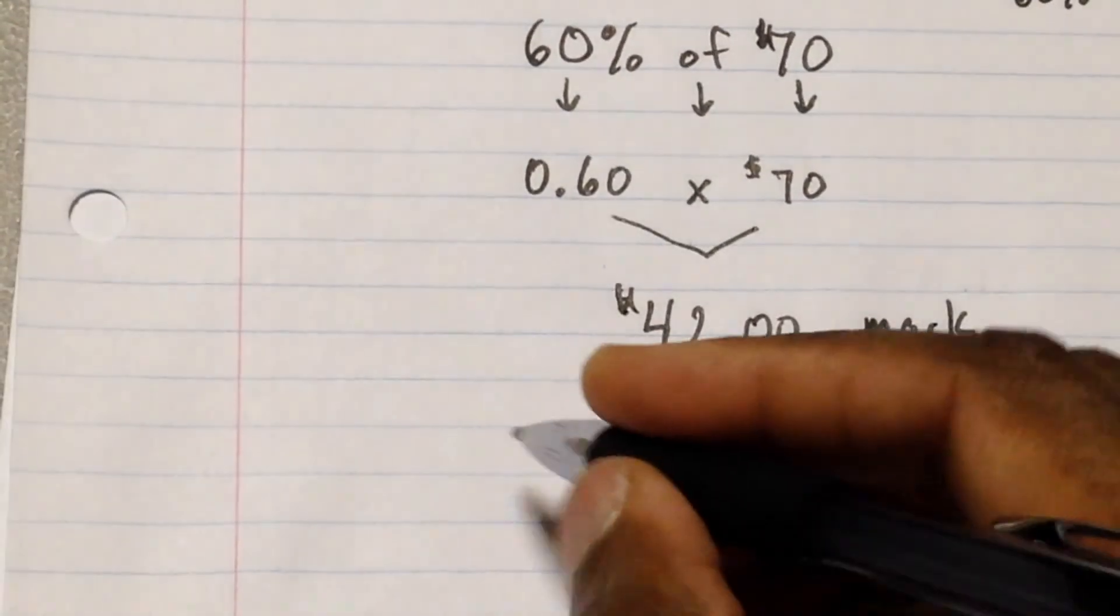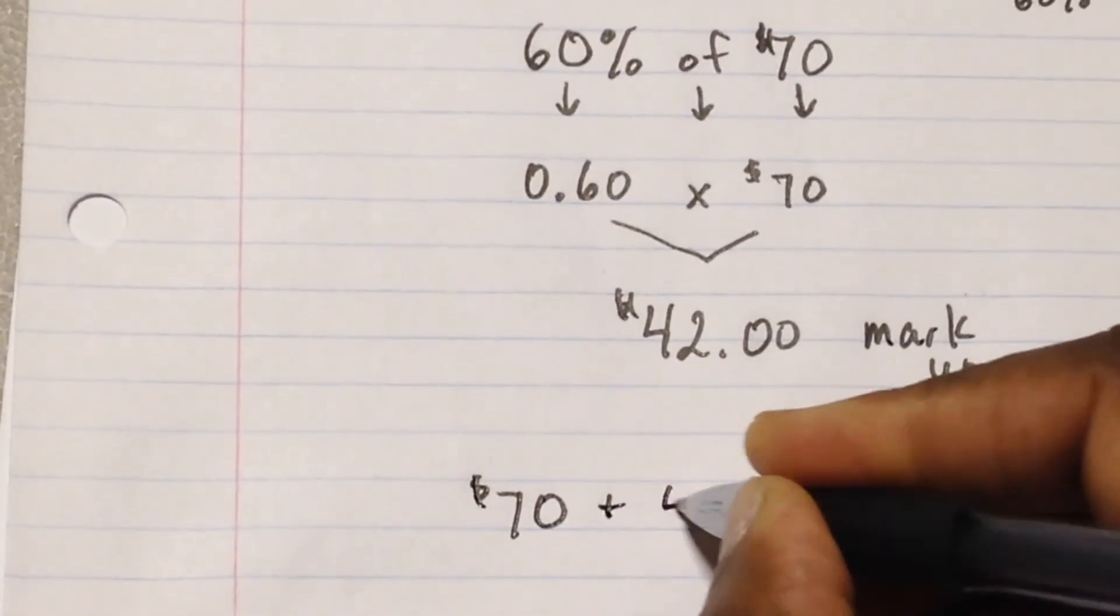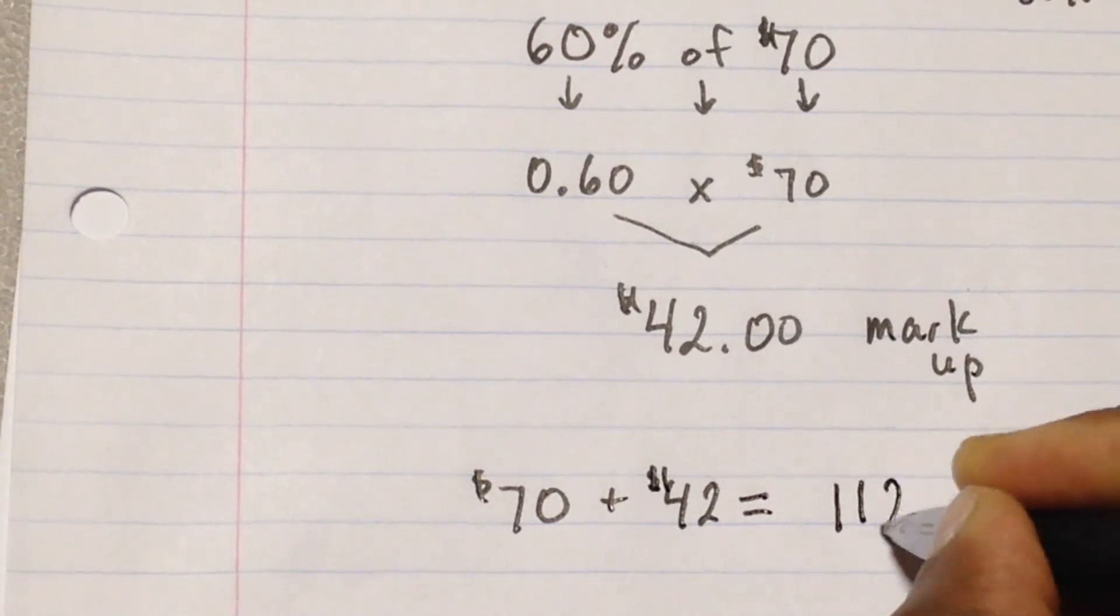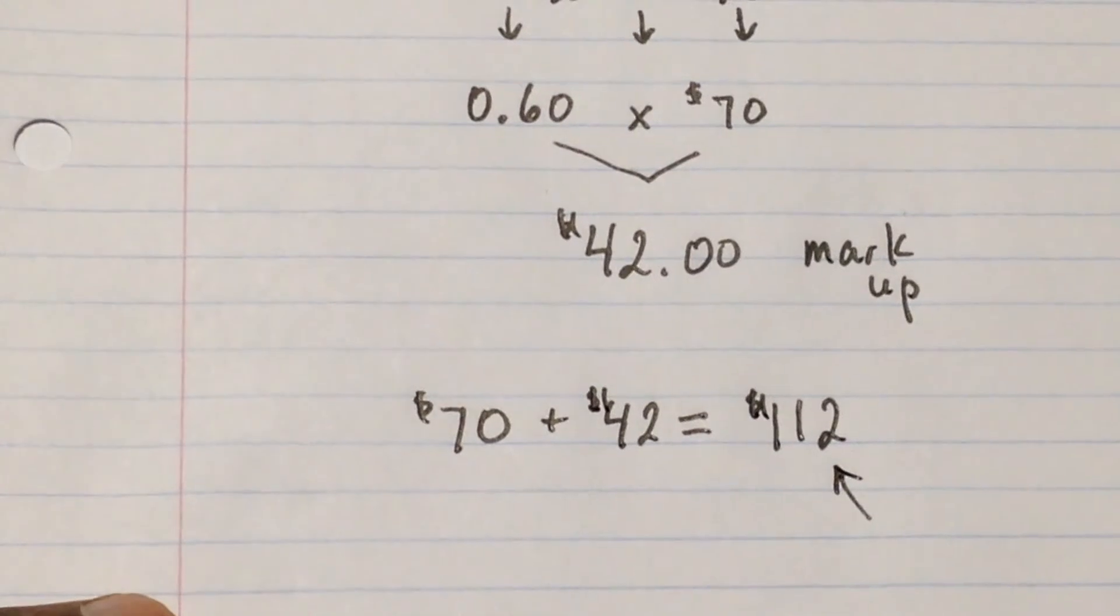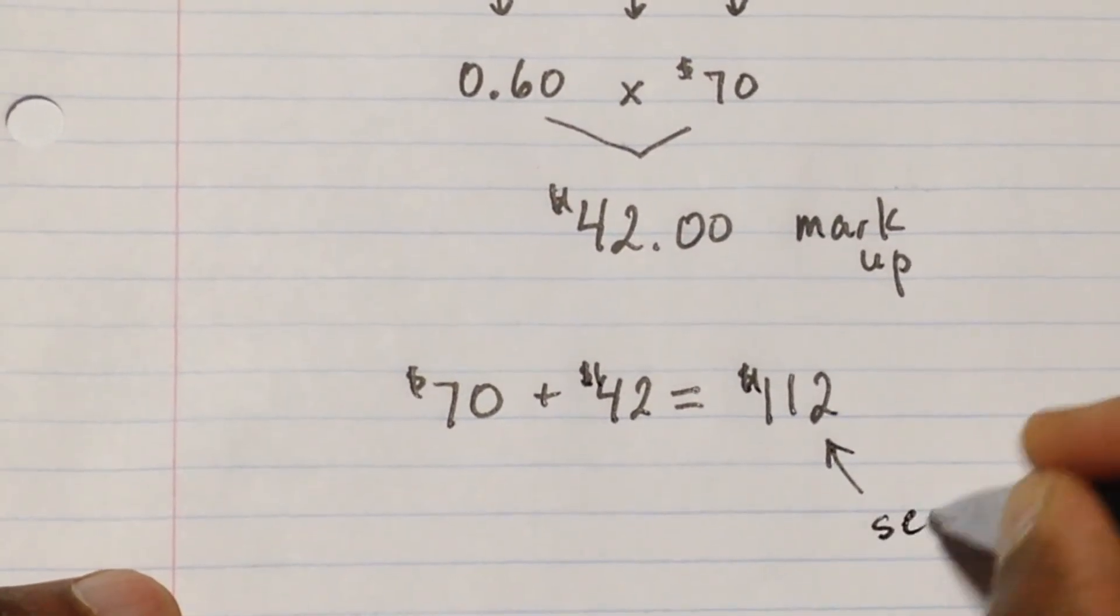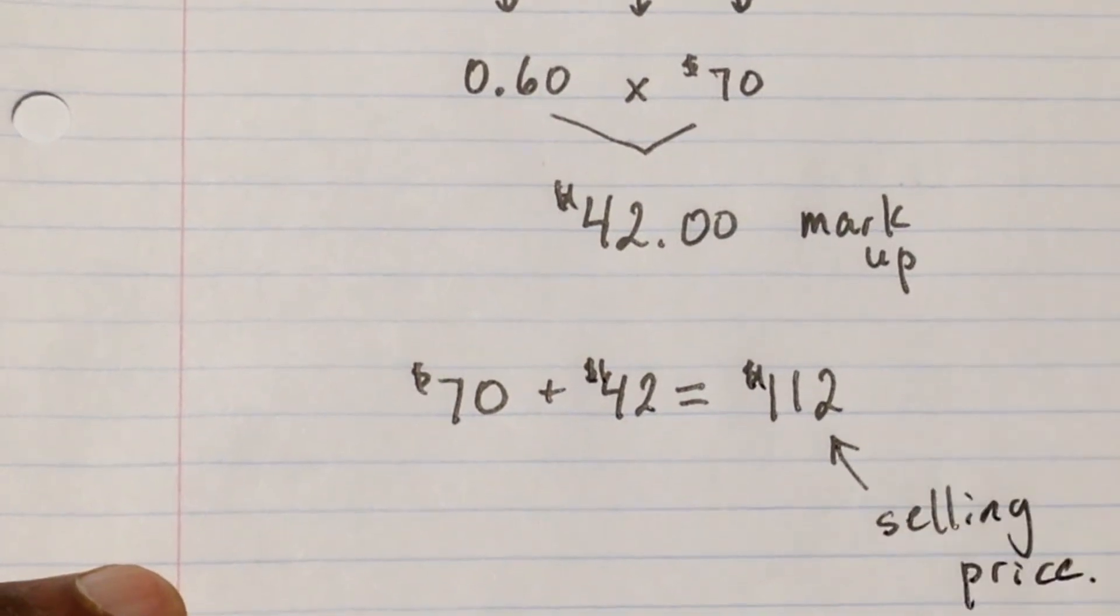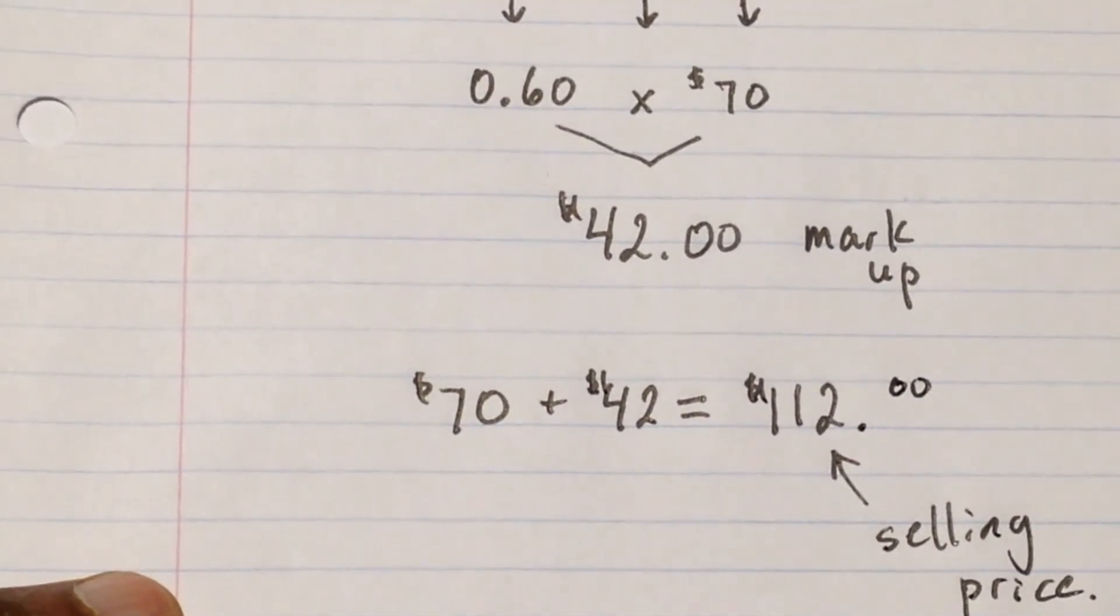That's how much we're going to mark it up by - by $42. So we take our cost price, add it with the markup and we come out to $112. So now this is what we are selling the bicycle for. So that's going to be called the selling price. Our selling price is $112 for the bicycle.